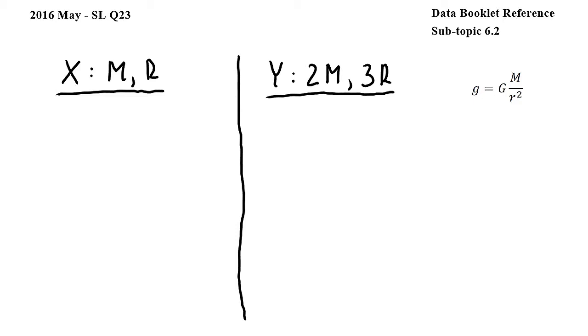The gravitational field strength at X is g, and we have to find the gravitational field strength at Y. We will use this equation from subtopic 6.2.